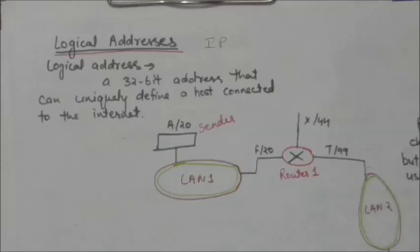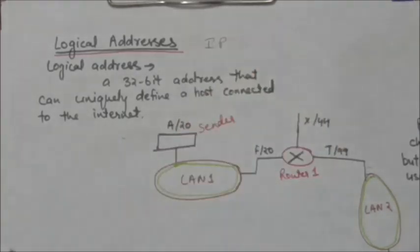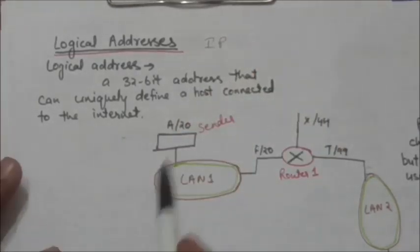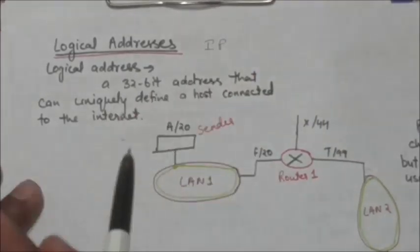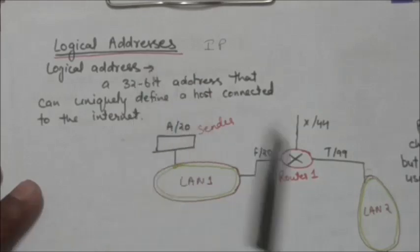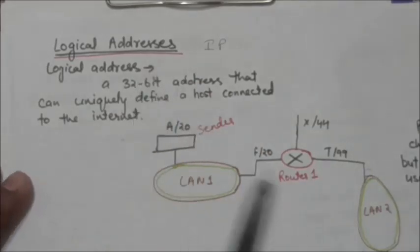Hello friends, welcome back. In this tutorial we will study about logical addresses. A logical address is also called an IP address. A logical address in the internet is currently a 32-bit address that can uniquely define a host connected to the network.